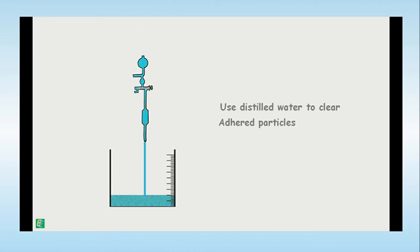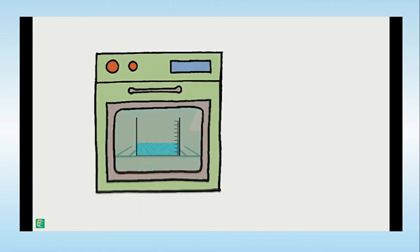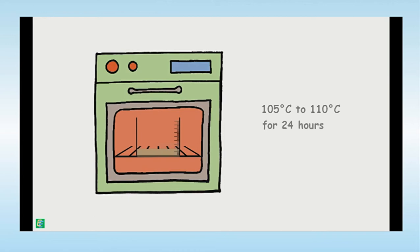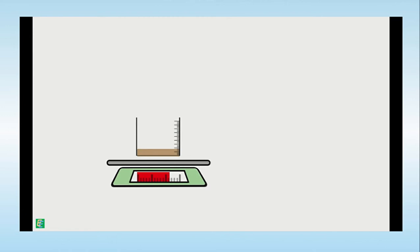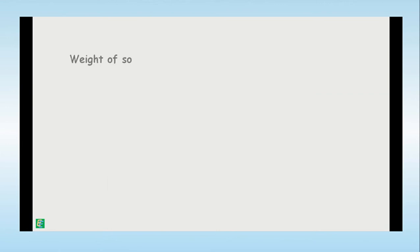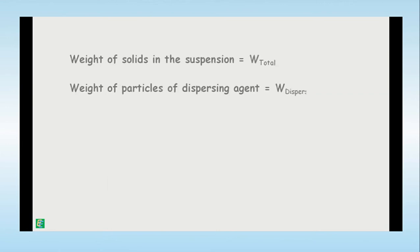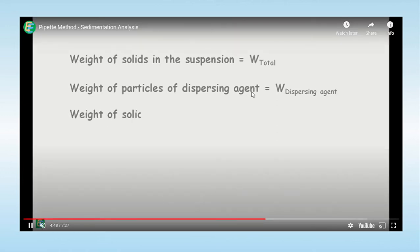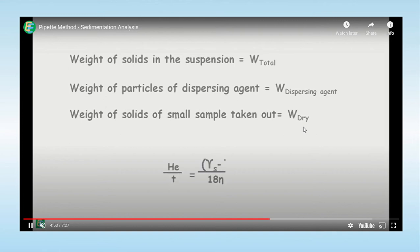Distilled water is added to rinse any particles remaining inside the pipette. The entire sample is then kept in an oven at 105 to 110 degrees Celsius for 24 hours. The dried weight, denoted as W_dry, is then measured. The weight of the total suspension is W_total, and the weight of the dispersing agent is W_dispersing_agent.